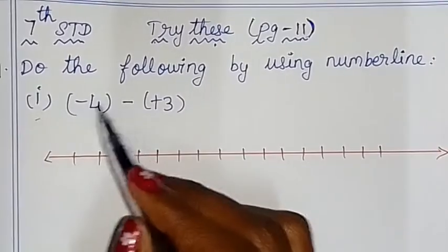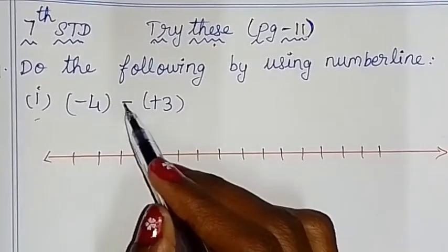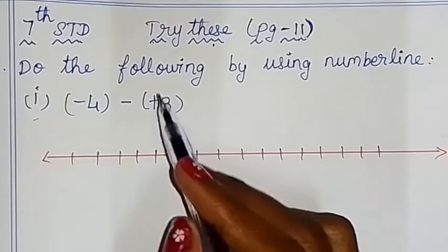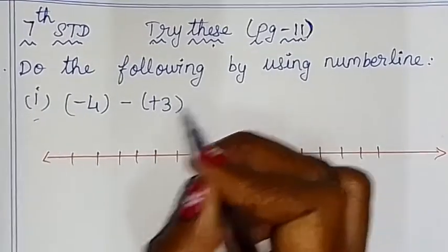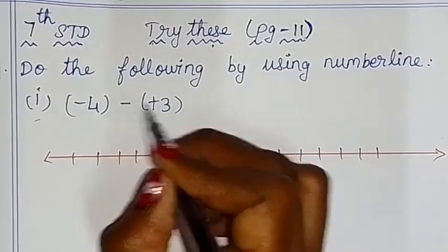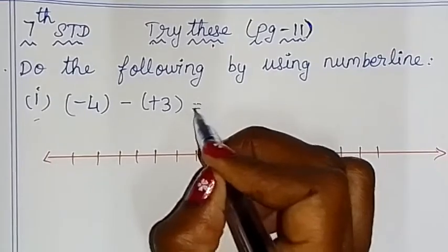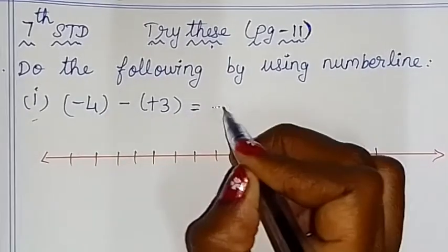First: minus 4 minus of plus 3. We will use number line to solve. First, we have two symbols in a row — the first one is a sign symbol.